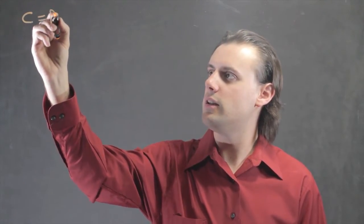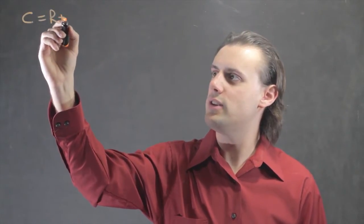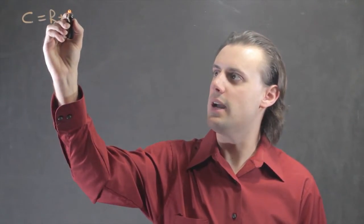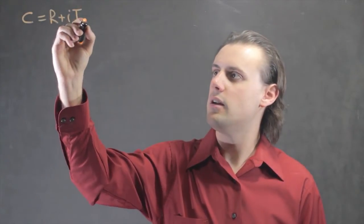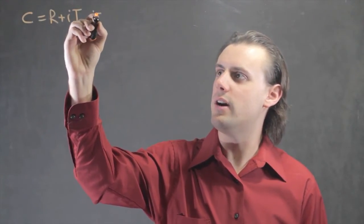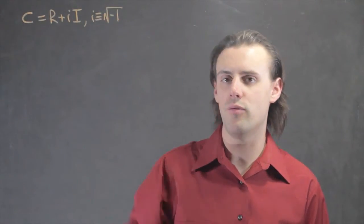Standard form implies that you generally have a complex number c, and you can write it in terms of a purely real part r, plus an imaginary part, which would be i times I, where i is defined as the imaginary unit, square root of negative 1.